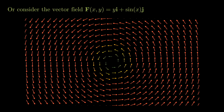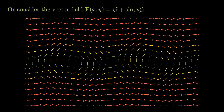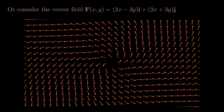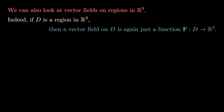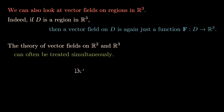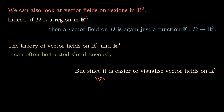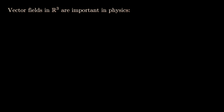We can also consider the vector field F(x,y) = (y + sin x) or F(x,y) = (2x - 3y, 2x + 3y). We can also look at vector fields on regions in R3, where a vector field assigns to every point a vector in R3. Since it's much easier to visualize vector fields in R2, we'll focus there.